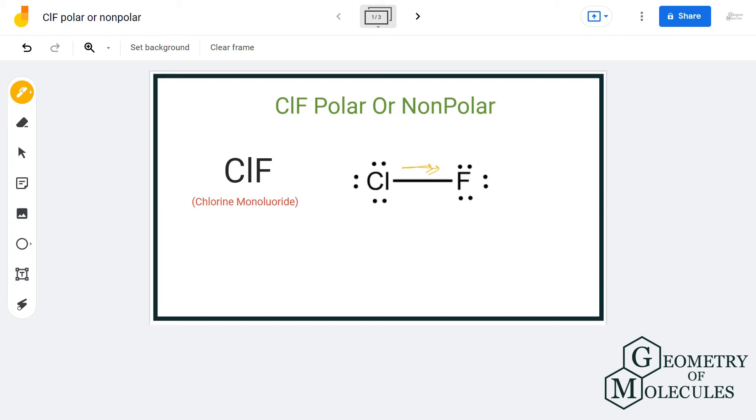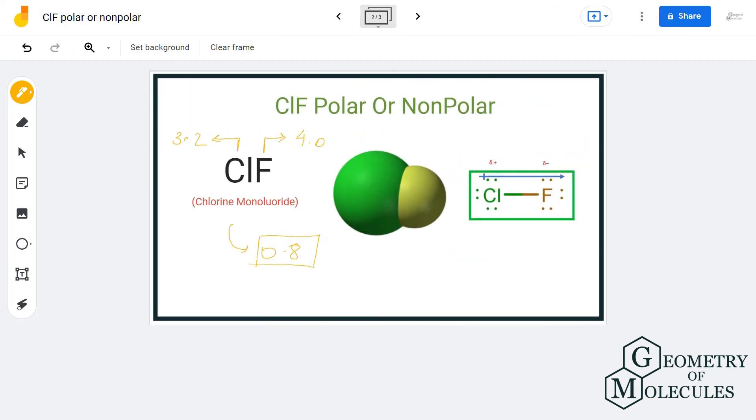In which the regions around fluorine atom will have partial negative charges and the regions around chlorine atom will have partial positive charges. And as there are poles formed in this molecule, ClF or chlorine monofluoride is a polar molecule.